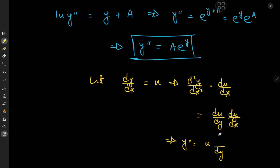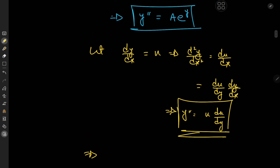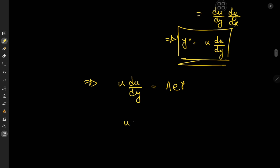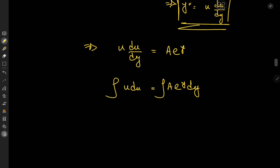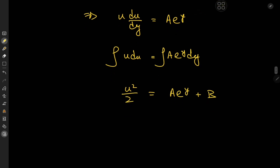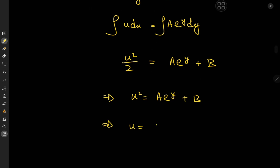Our differential equation now transforms into u · du/dy = a·e^y, which is a nice separable equation. So we have u du = a·e^y dy. Integrating gives u²/2 = a·e^y + b. Expanding by 2 and absorbing the factor into the constants, we get u² = a·e^y + b, and taking the square root gives u = ±√(a·e^y + b).